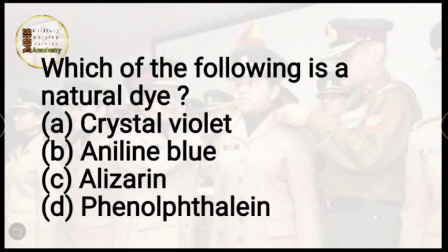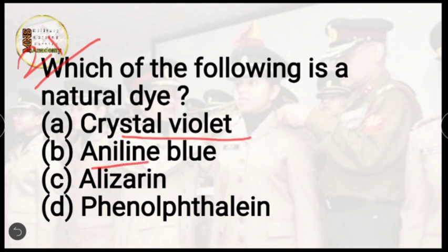Question number 21: which of the following is a natural dye? Options are crystal violet, aniline blue, alizarin, or phenolphthalein. The correct answer is option C, alizarin.